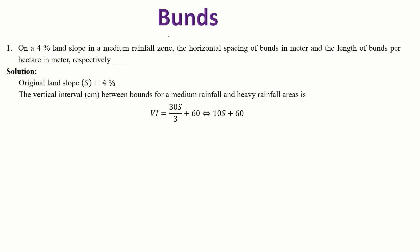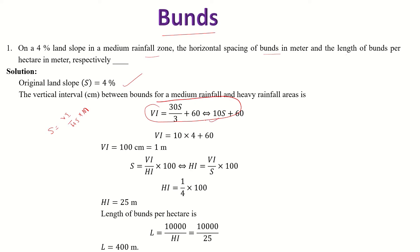On the bunds, with land slope 4% in a medium rainfall zone, we need to find the horizontal spacing of the bund and the length of the bund. The original slope is given as 4%. For the horizontal interval, we know that land slope S equals vertical interval divided by horizontal interval, multiplied by 100. The slope is given and based on the vertical interval formula, we substitute the S value to get the vertical interval.